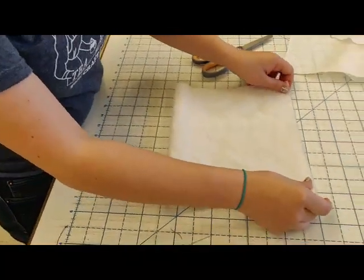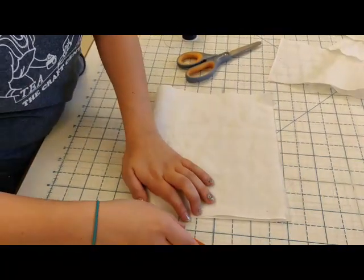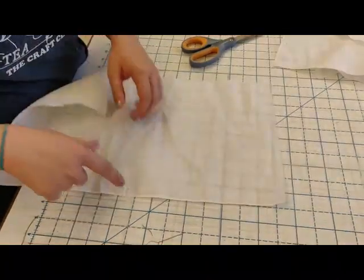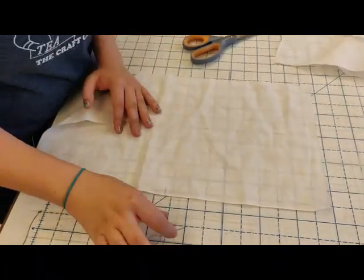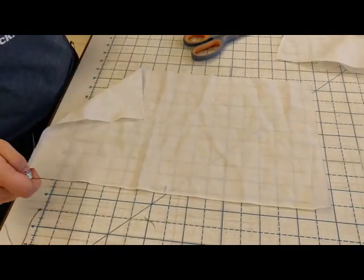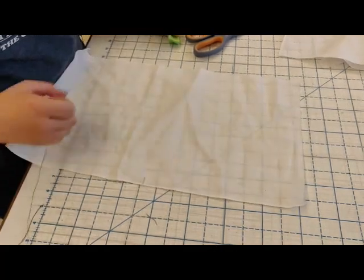In our previous video, we used an iron to kind of iron down our edges and to iron down a crease in the middle. I'm not going to be using that—some people don't have irons at home. So we're just going to be doing it the good old-fashioned way, with the needle and thread.